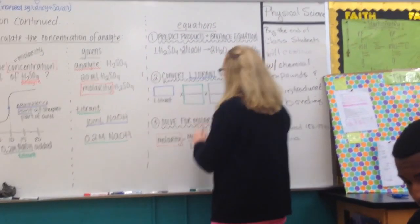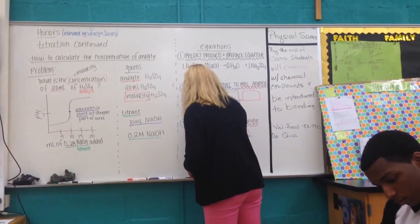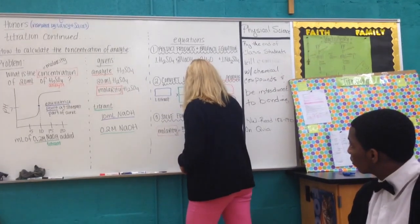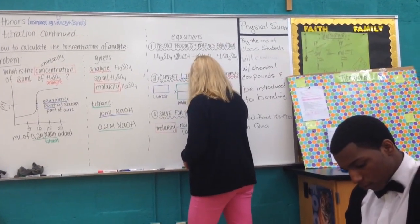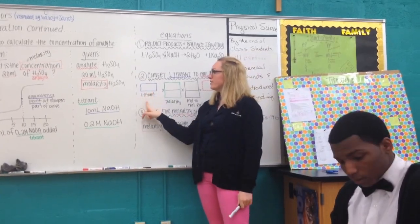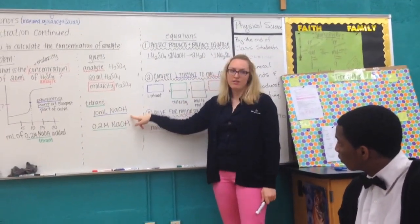First thing we're starting with is liters of titrant. Next thing we start with then is to use molarity. And finally, the last thing we use is a mole-to-mole ratio. So if I'm looking for liters of titrant, I start with 10 milliliters of NaOH.